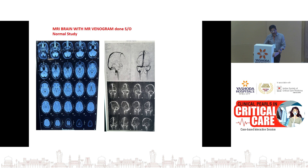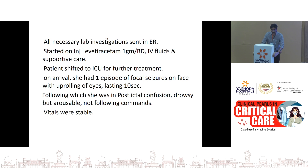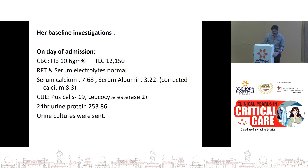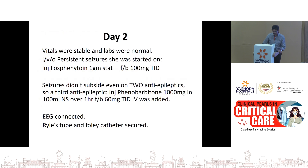MRI was done — in pregnancy it is a safe modality. MRI was performed to exclude PRES (posterior reversible encephalopathy syndrome) and CVST. Both were excluded and there was no organic pathology identified. All necessary investigations were done and the patient was shifted to the ICU. She was still seizing. All routine reports — blood counts, renal function tests, and electrolytes — were normal on the day of admission.